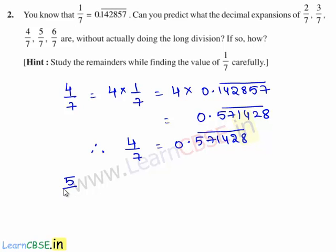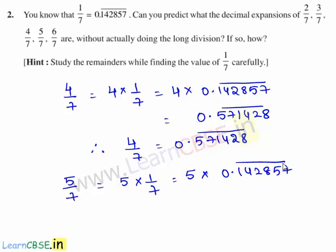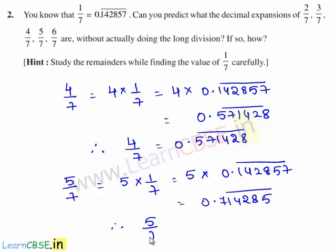Now, the decimal expansion of 5 by 7 is obtained by multiplying 5 with 1 by 7. That is, we multiply 5 with the decimal expansion of 1 by 7, which is 0.142857 bar. So, 5 times 0.142857 bar gives 0.714285 bar. Therefore, 5 by 7 is equal to 0.714285 bar.